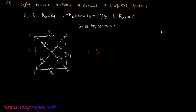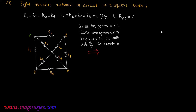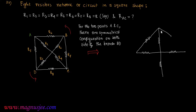For the two points A and C, there are symmetrical configurations on both sides of the branch BD. The branch BD is rotated anti-clockwise, and the network will have a new position where the branch AC will be horizontal.